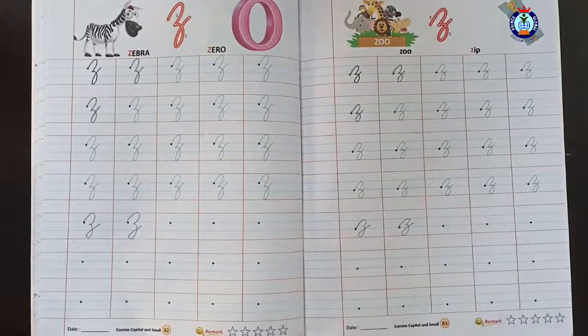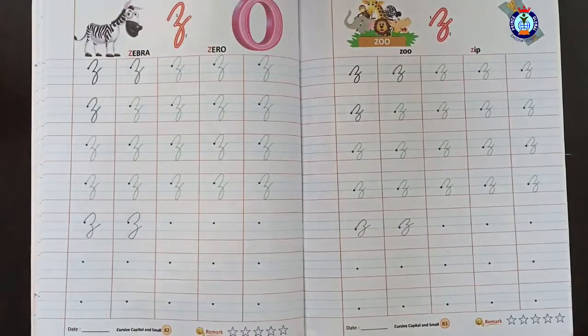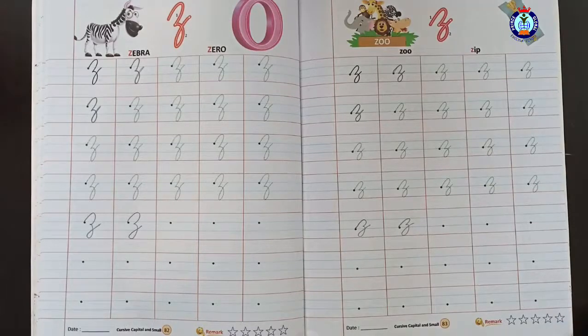Where you have dots, you can see. Write down page number 82, page number 83. In both pages, complete cursive capital letter Z and cursive small letter Z. You can complete the work, then send pictures. Thank you.